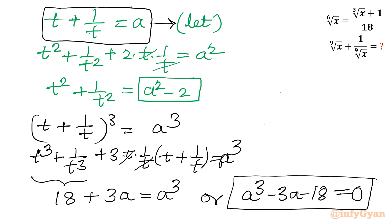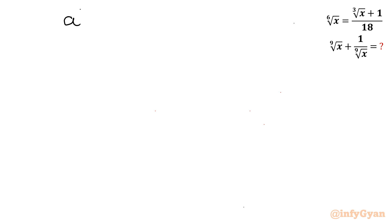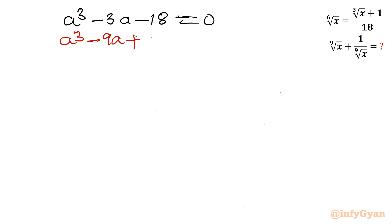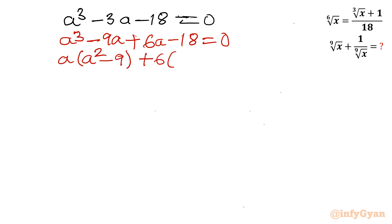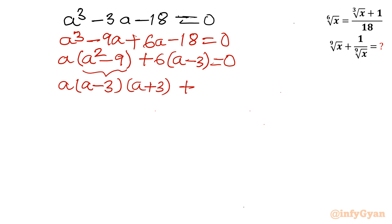This is a cubic equation. We will solve by factorization. So a cubed minus 3a minus 18 equal to 0. Splitting the middle term minus 3a as minus 9a plus 6a gives a times (a squared minus 9) plus 6 times (a minus 3) equal to 0. Applying the difference of two squares to a squared minus 9 gives (a minus 3)(a plus 3), so we get (a minus 3)(a plus 3) plus 6(a minus 3) equal to 0. Now (a minus 3) is a common factor.